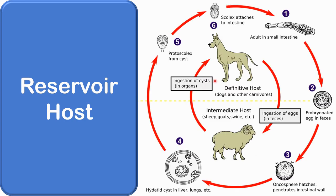The reservoir host, in an endemic area, is a host which harbors the parasite and acts as an important reservoir of infection for other susceptible hosts. For example, the dog is the reservoir host of hydatid cysts. Humans are accidentally infected by eggs released in dog feces — a dead-end infection. However, when eggs are ingested by sheep, goat, or swine, they develop into hydatid cysts, and when these animals are eaten by dogs or other carnivores, the infection is transmitted. The parasite undergoes sexual reproduction in dogs, making them the definitive host and sheep the intermediate host.